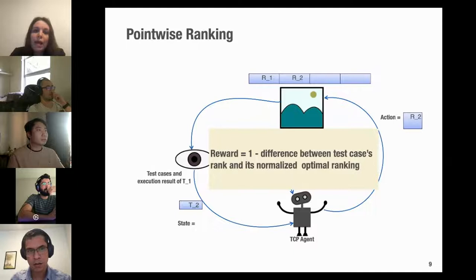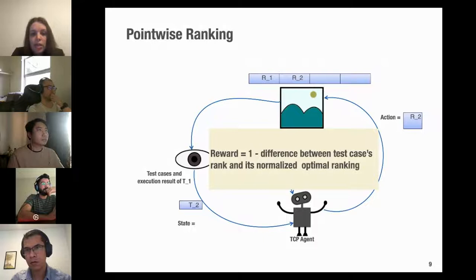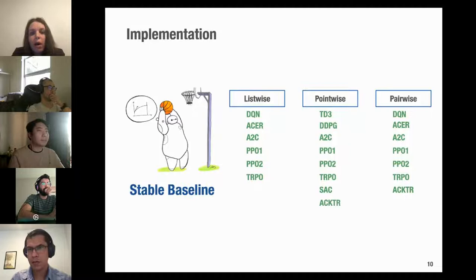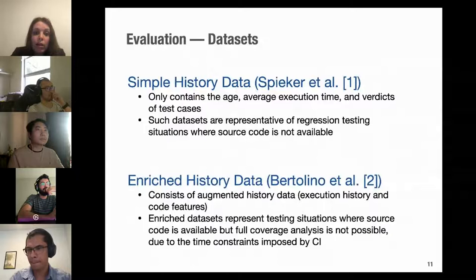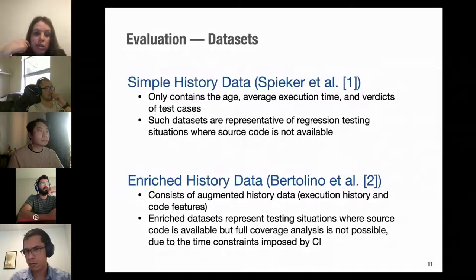In pointwise ranking, at each step we consider only one test case as a state and the agent returns a real number corresponding to the rank of that test case. The reward is calculated based on the difference between the normalized optimal ranking and the assigned rank. To evaluate the algorithms, we used 10 RL algorithms provided by the Stable Baselines framework and ran extensive experiments on two categories of datasets: simple history data and enriched history data, both publicly available.